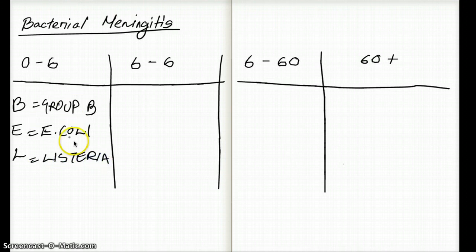Group B would be the first choice, E. coli followed by group B, and Listeria the last. So if you have all these choices and a patient from 0 to 6 months, the most common would be group B, followed by E. coli, followed by Listeria. That's 0 to 6 months.